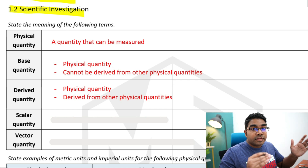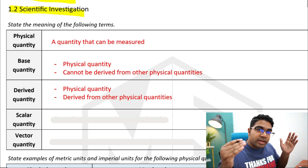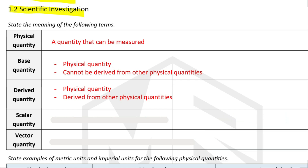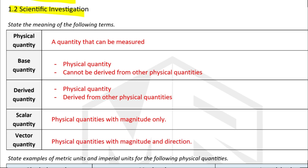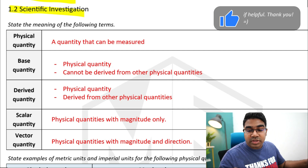Physical quantities can also be divided into scalar and vector. A scalar quantity is a quantity that only has magnitude — it has no direction. A vector quantity is a physical quantity with both magnitude as well as direction. We will look at examples of those as well.